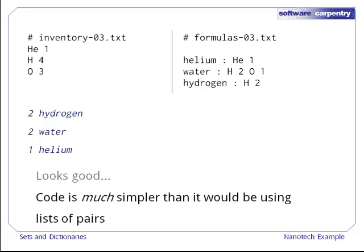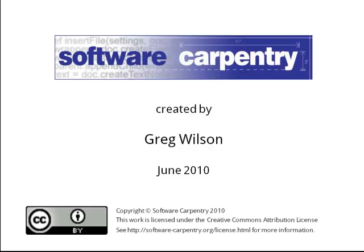And our code is a lot simpler than it would be if we used lists of pairs of atom names and counts, or some other data structure. This is the end of our lecture on sets and dictionaries. We hope you'll take a few minutes to try a few of the exercises.